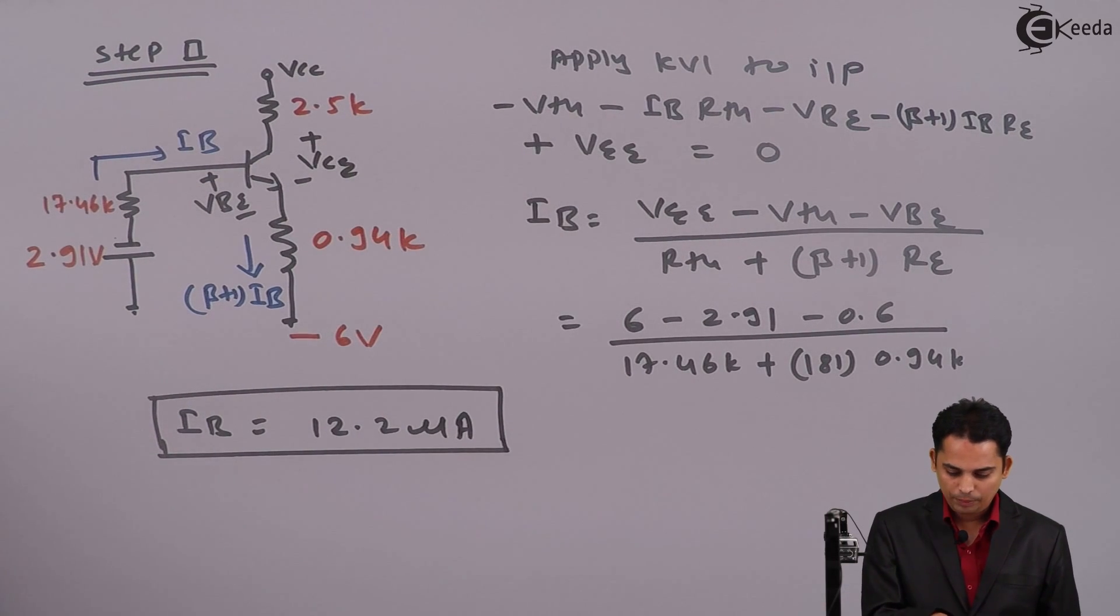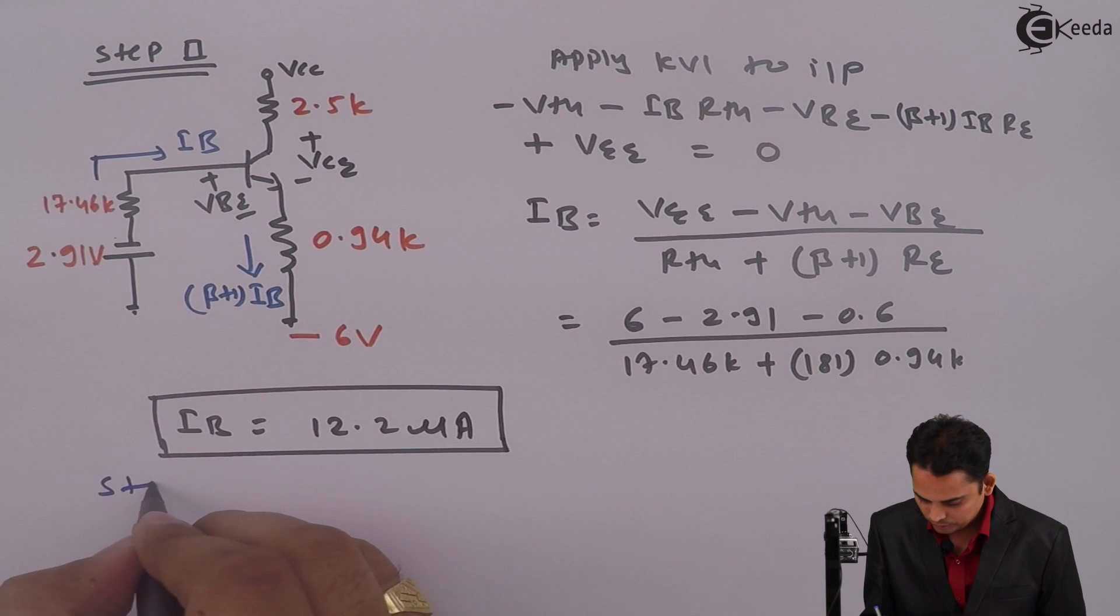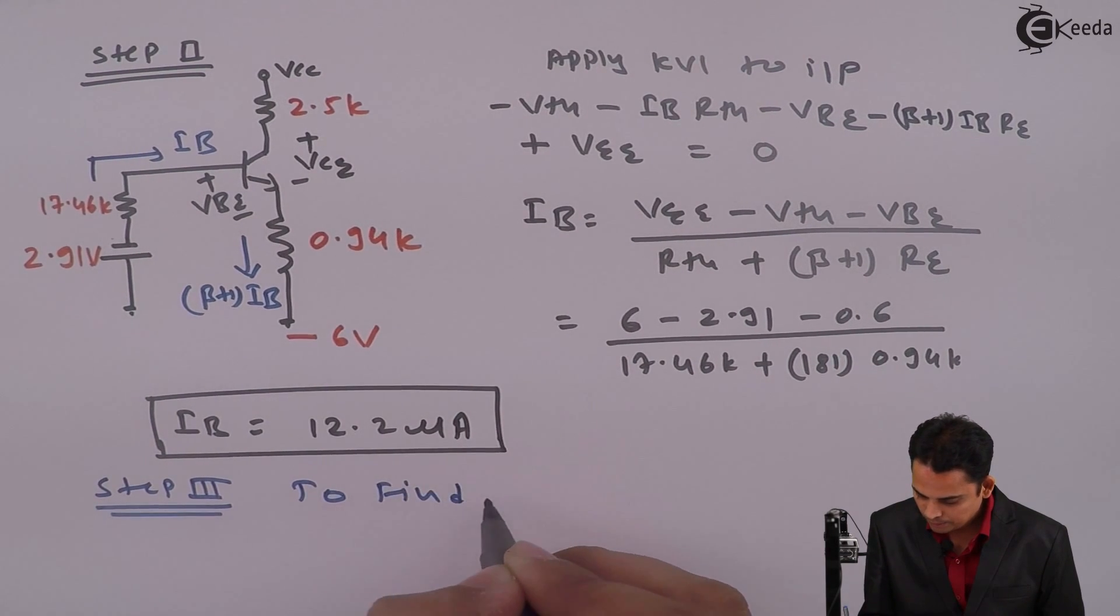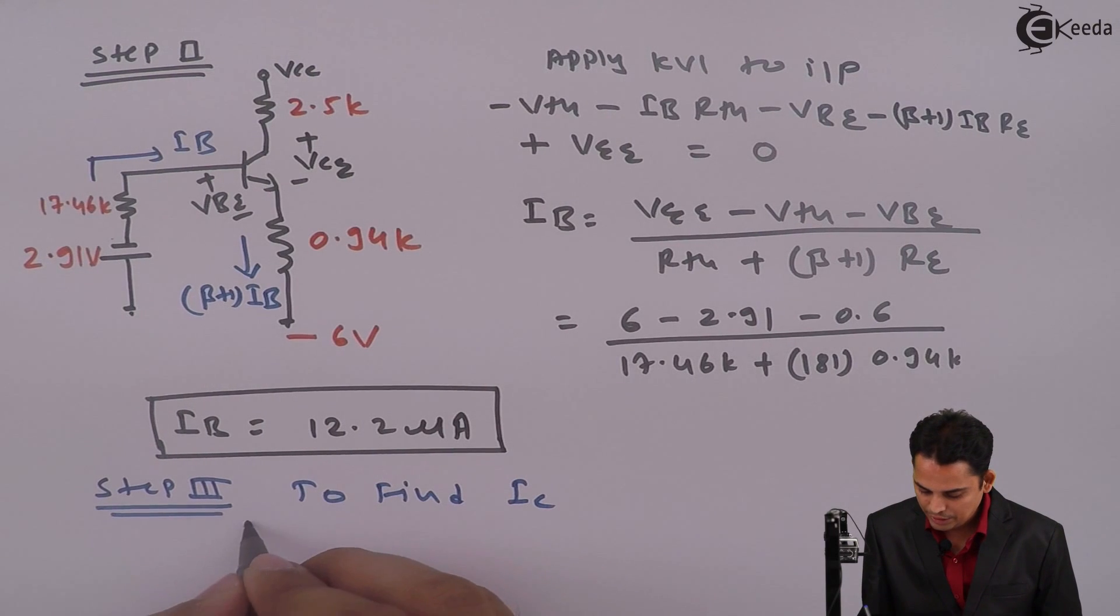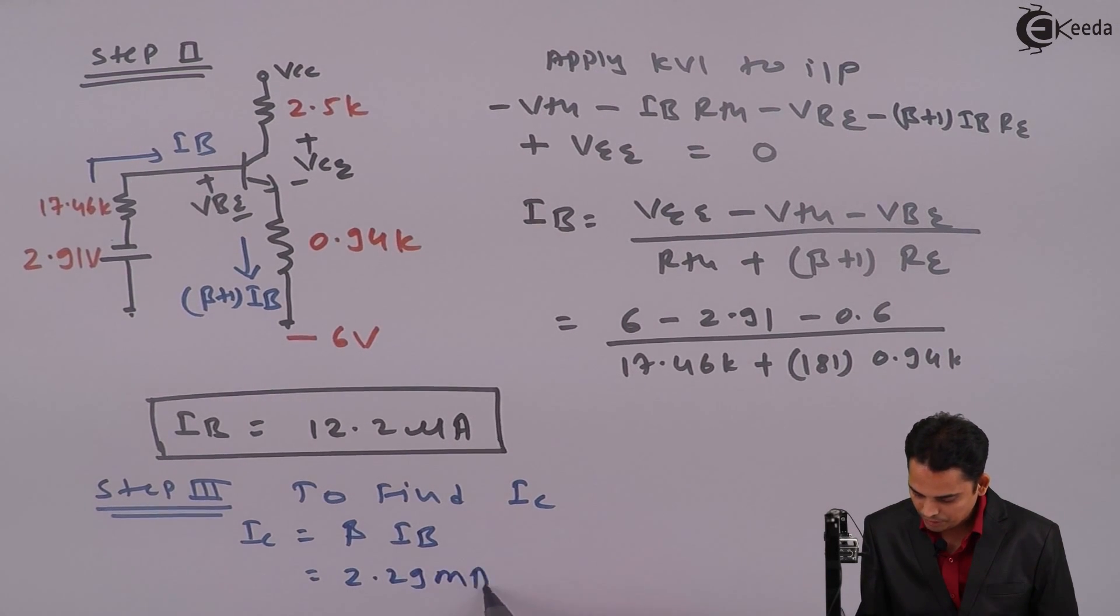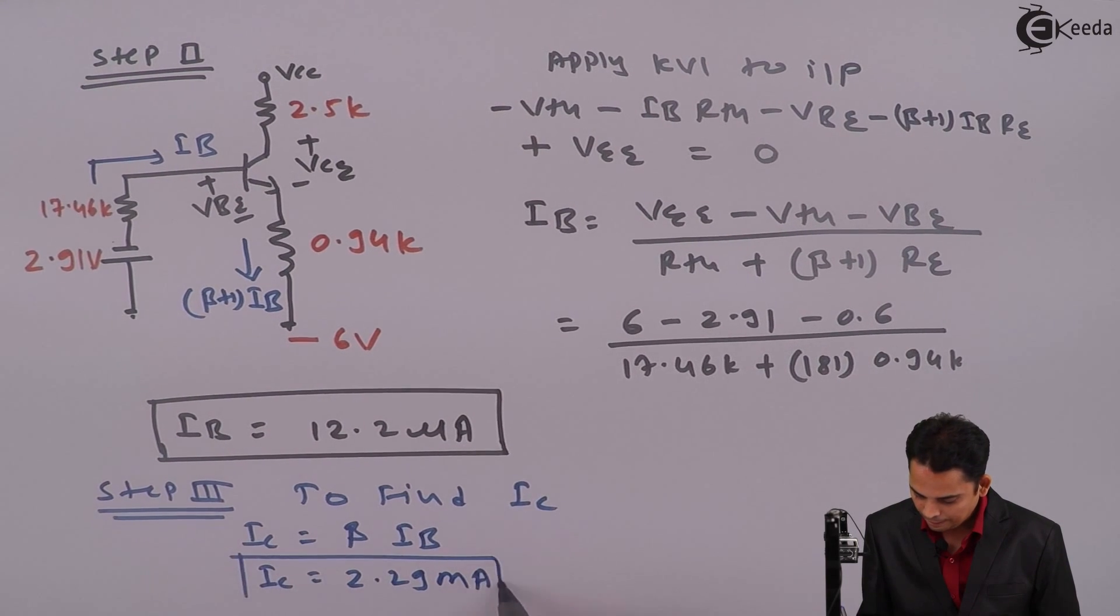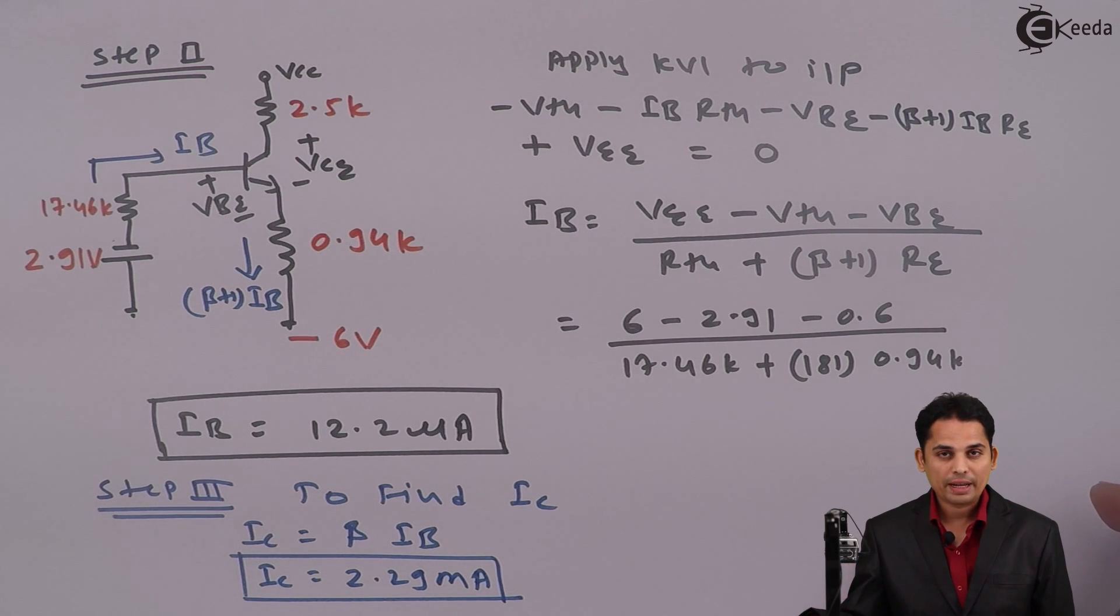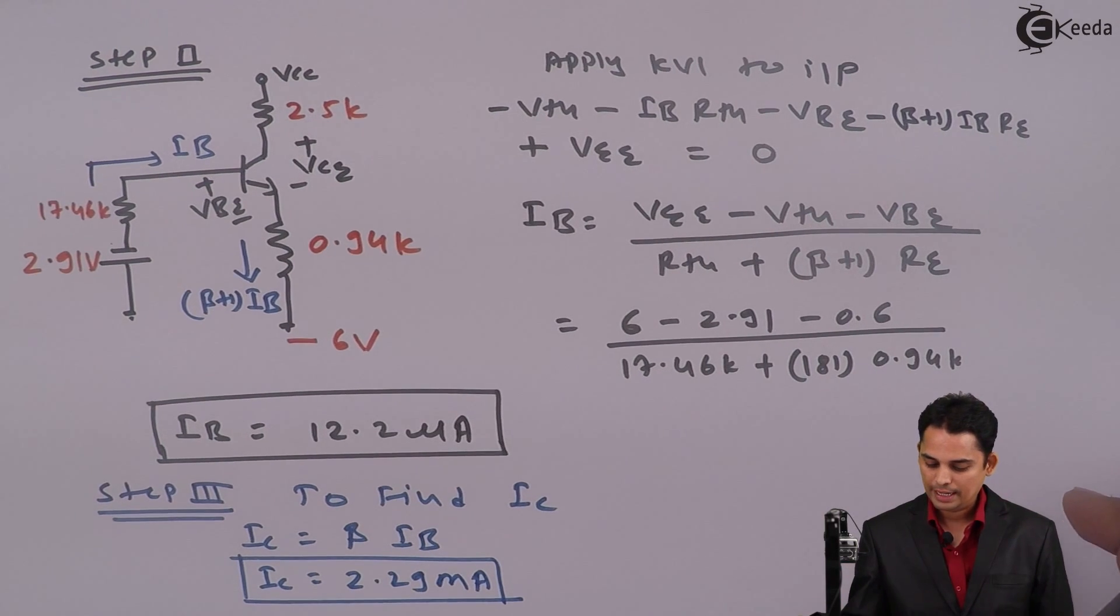Now, step 3 to find IC. We know that IC is equal to beta times of IB and hence value of IC becomes 2.29 milli amperes. So we have got first Q point IC or one parameter in the Q point called as IC.